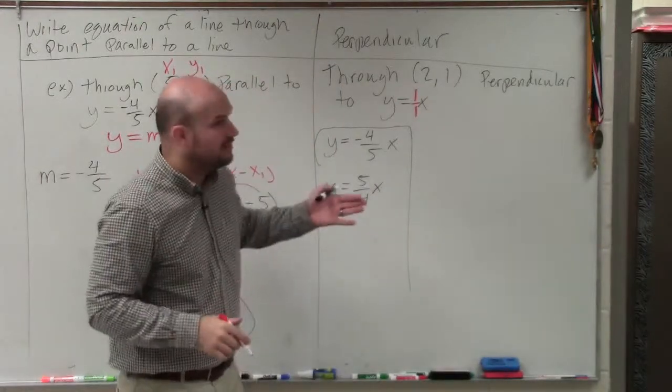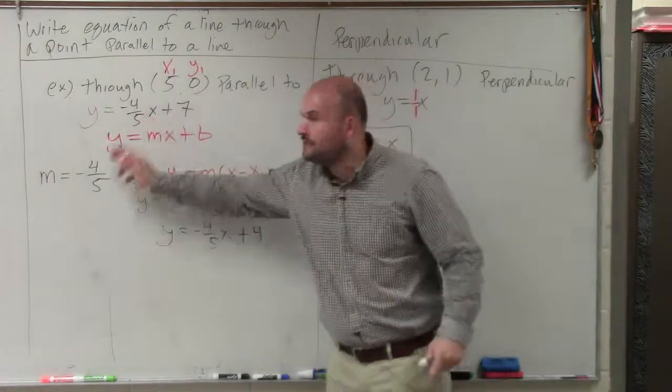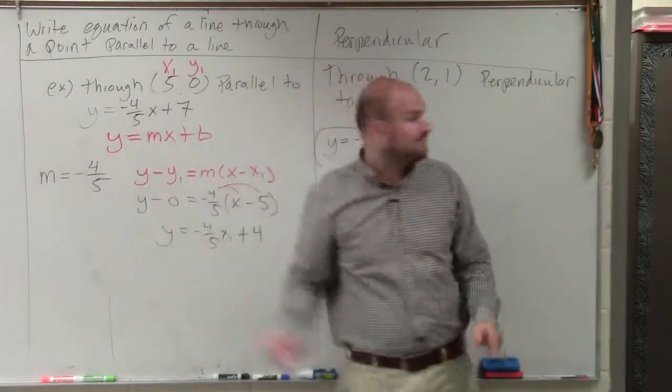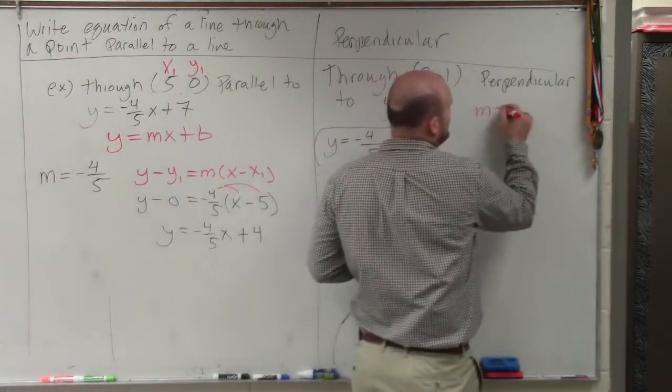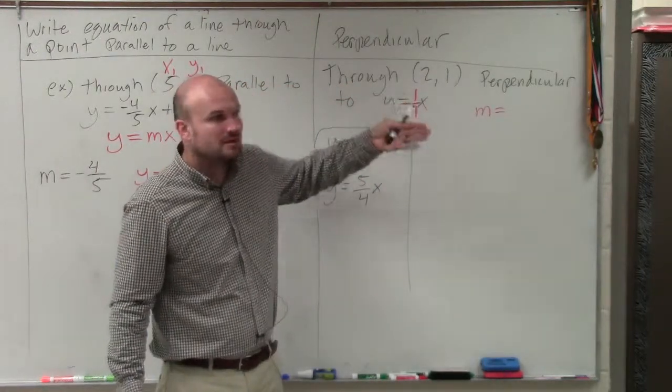So now my new equation, though, has to have the opposite reciprocal slope. So rather than having over here, remember, we knew the slopes had to be the same. Now my slope has to be the opposite reciprocal. So what's the opposite reciprocal of 1 over 1?